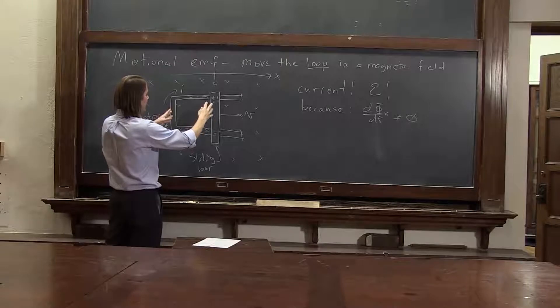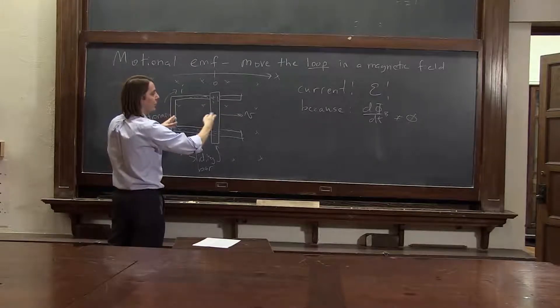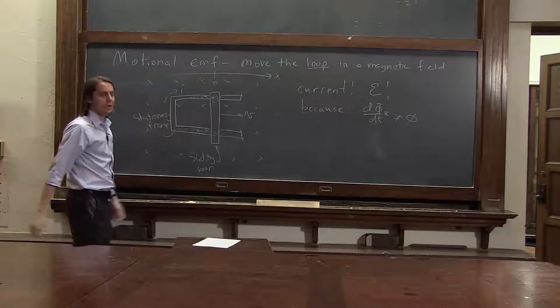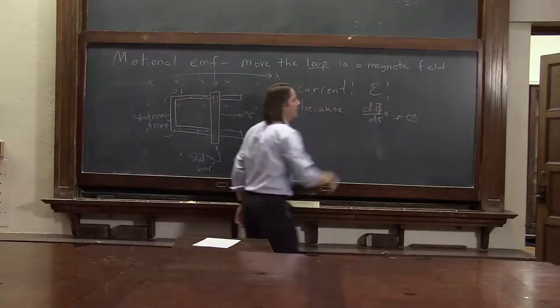Magnetic field is constant, but our area is getting bigger. So B dot A is increasing or decreasing, depending on which way you call positive. But basically, if this doesn't change, you make an EMF.